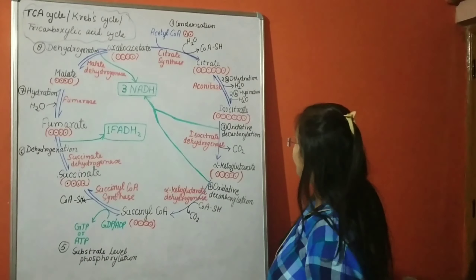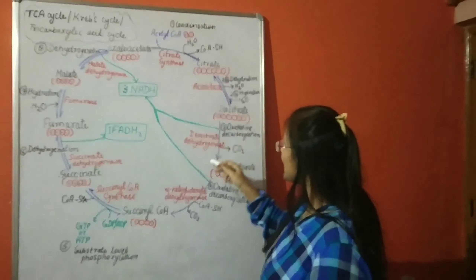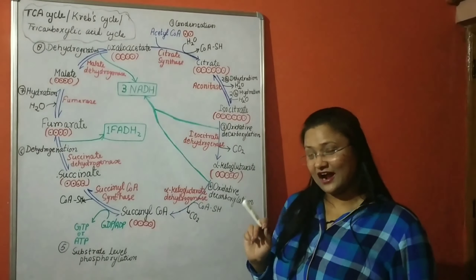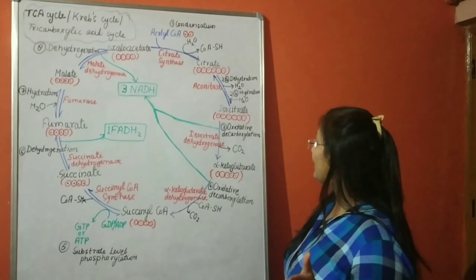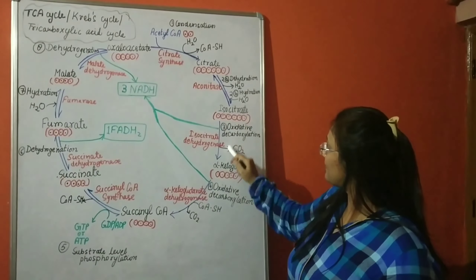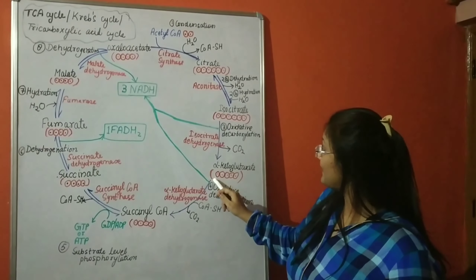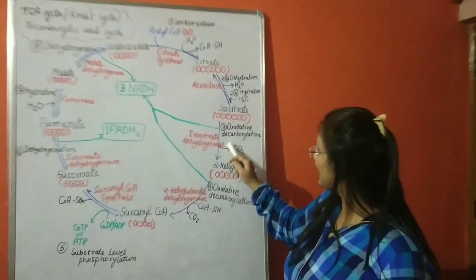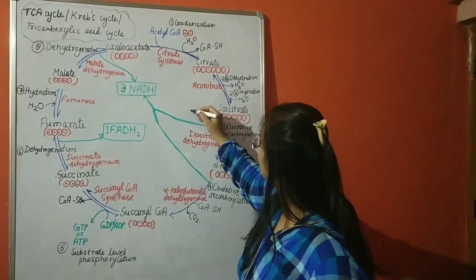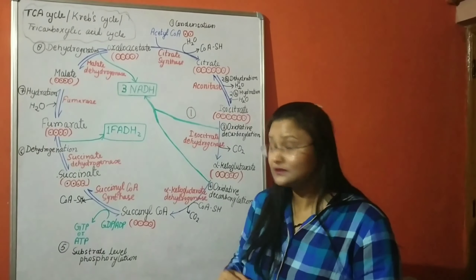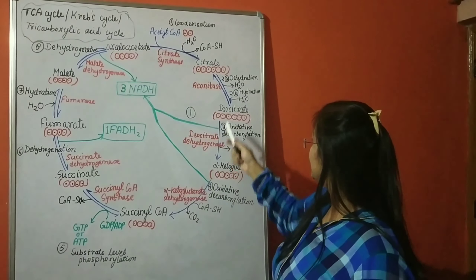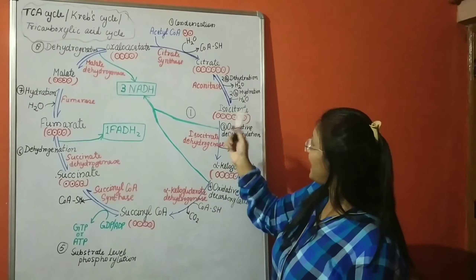The third step is the formation of alpha-ketoglutarate from isocitrate, catalyzed by isocitrate dehydrogenase. Here, oxidative decarboxylation occurs — decarboxylation means removal of a carbon atom in the form of carbon dioxide. A five-carbon compound, alpha-ketoglutarate, is formed. This is a very important step because in this step we get the first NADH molecule.